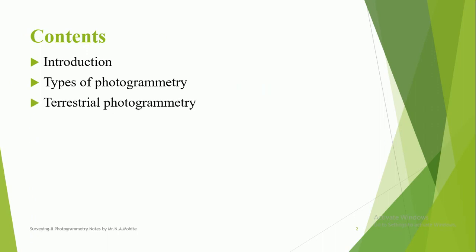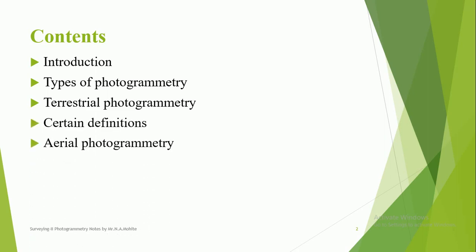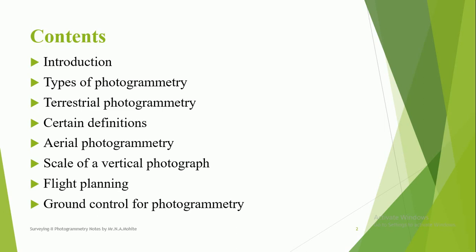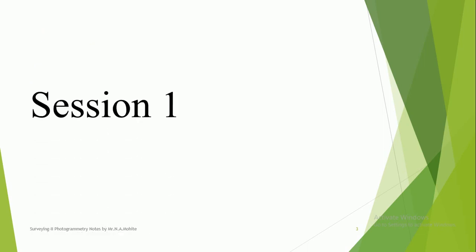We will first see the various contents we are going to learn in this topic. First, we'll see the introduction, then types of photogrammetry, terrestrial photogrammetry, certain definitions related with photogrammetry, then aerial photogrammetry, scale of a vertical photograph, flight planning, ground control for photogrammetry, and various problems related with calculating the number of photographs and the length between two points. This is session number one.